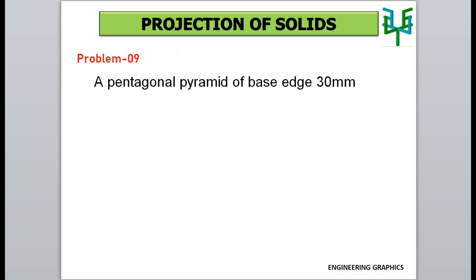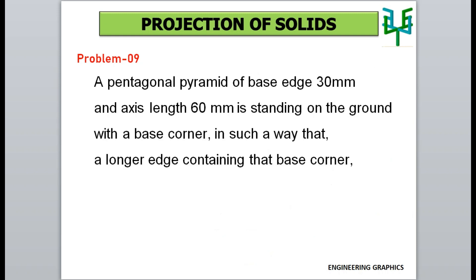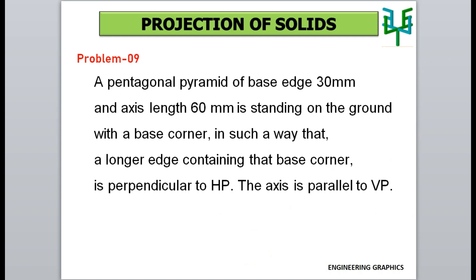A pentagonal pyramid of base edge 30 mm and axis length 60 mm is standing on the ground with a base corner, in such a way that a longer edge containing that base corner is perpendicular to HP. The axis is parallel to VP. Draw its projections.